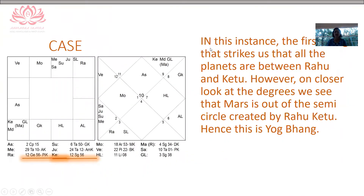In this chart, we see that Rahu and Ketu are covering all the planets in between them, and it is a very strong yoga because Rahu is facing all the planets. But does Kalsarp Yoga actually exist in this chart? No. Let us look at the degree of Ketu, which is with a retrograde Mars. Ketu is at 12 degrees and Mars is at 4 degrees, meaning Mars is beyond the orbit of Ketu. That means not all the planets are within the Rahu-Ketu axis — thereby there is a yoga bhang. So next time you check a chart for Kalsarp Yoga, make doubly sure that all the planets are within the orbit of Rahu and Ketu.